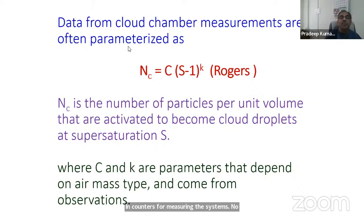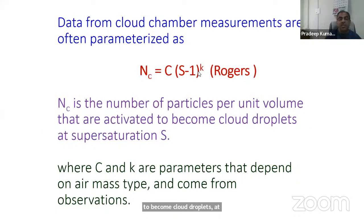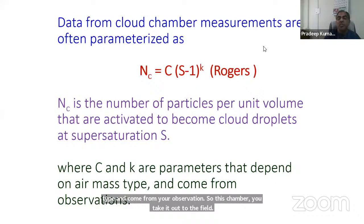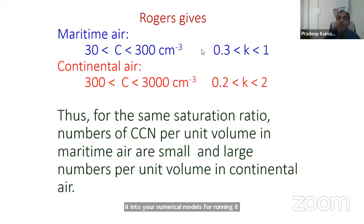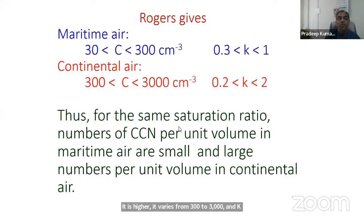Data from CCN chamber measurements are often parameterized in the form N_c = C × S^k, where N_c is the number of particles per unit volume activated as cloud droplets at supersaturation S, and C and k are parameters that depend upon the air mass type from observations. You take the chamber to the field, carry out observations, and get the number of activated CCNs in this form to input into numerical models. In a maritime air mass, C varies from 30 to 300 per cm³ and k from 0.3 to 1. In continental air, C is higher, from 300 to 3000, and k varies from 0.2 to 0.2.